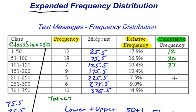So 37 plus 9 is 46. 46 plus 5 is 51. 51 plus 6 is 57. And 57 plus 10 is 67. And that takes us back to our totals right there. So that's how you can create an expanded frequency distribution.